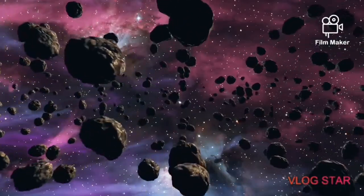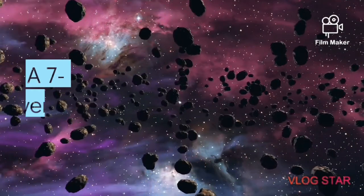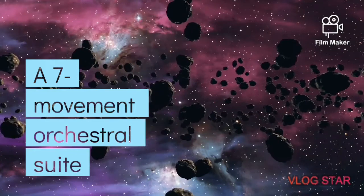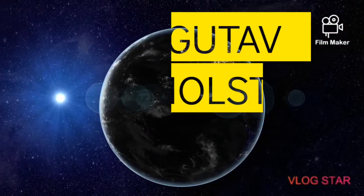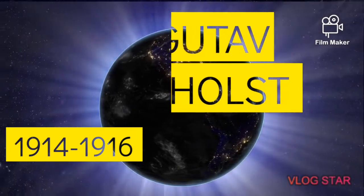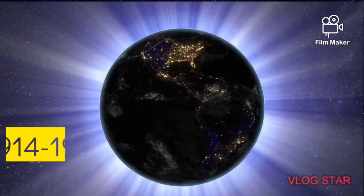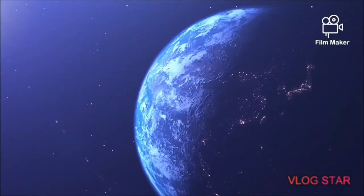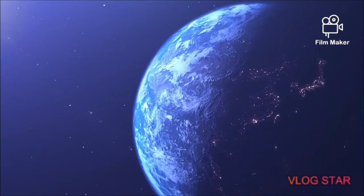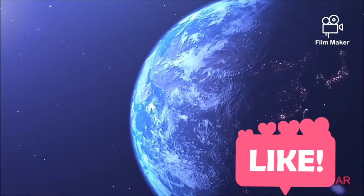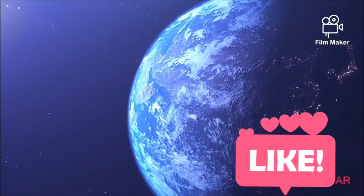The Planets is a seven-movement orchestral suite by the English composer Gustav Holst, written between 1914 and 1916. Each movement is named after a planet of the solar system and its corresponding astrological character as defined by Holst.